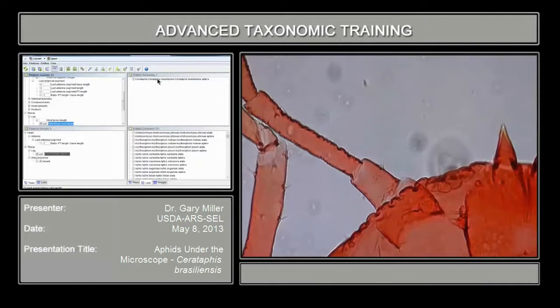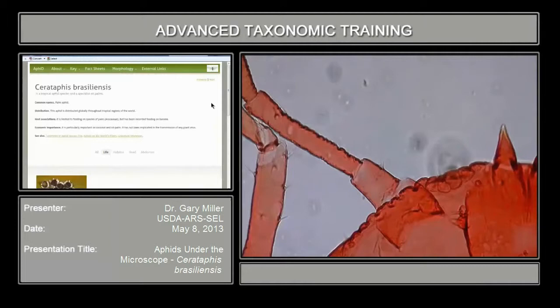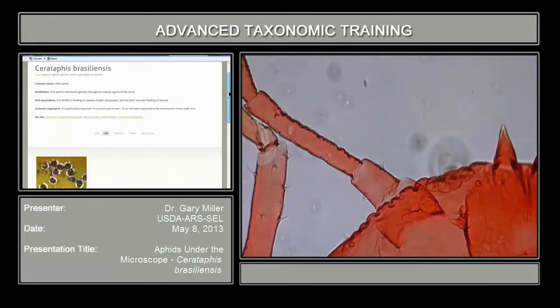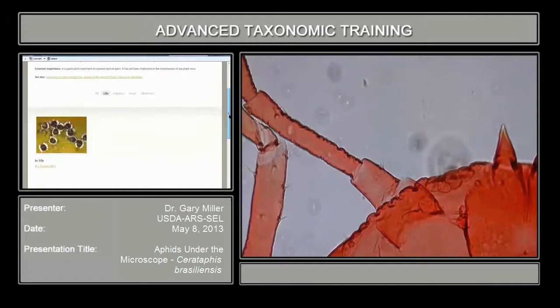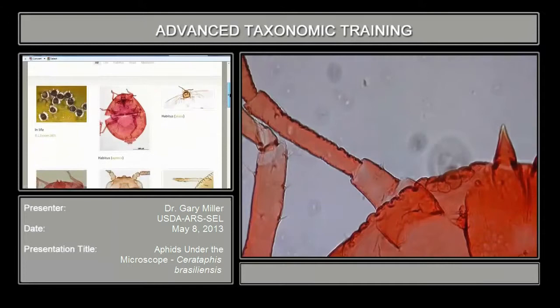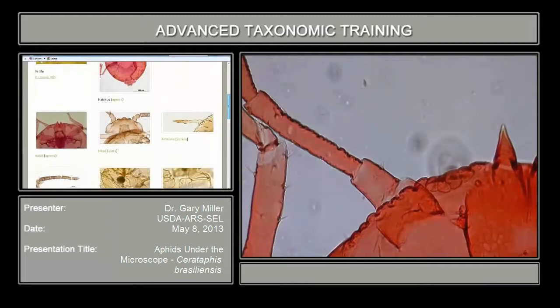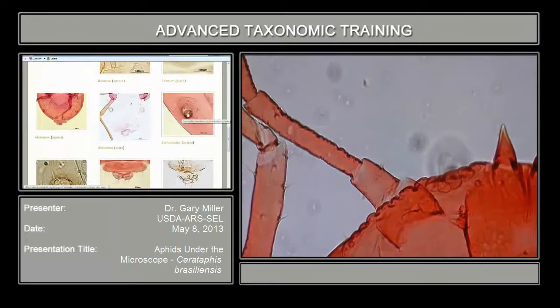My colleague Susan mentioned this is a good opportunity to say what this species does if it gets on palms. It's called the palm aphid. I clicked on the link and it takes me to the fact sheet with a little bit about its host and general distribution. It's particularly important on coconut and oil palms, and it has not been implicated in the transmission of any diseases. Here you can see what the specimens look like. This is also a good opportunity to check yourself — the siphunculi are greatly reduced in this particular species.